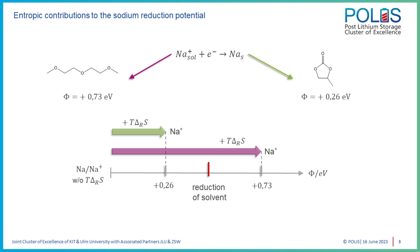From the value of the reaction entropy, we are able to determine the entropy contribution to the free energy of the sodium reduction reaction, which amounts to −70 kJ per mole in DME and −25 kJ per mole in propylene carbonate. Since the free energy correlates directly with the Galvani potential, the entropy change also affects the reduction potential of the sodium ions. The values of the reaction entropy we obtain correspond to a positive shift in the redox potential of 0.73 V for sodium ions in DME, and about 0.26 V in propylene carbonate.